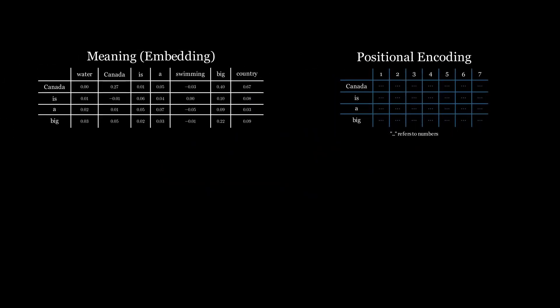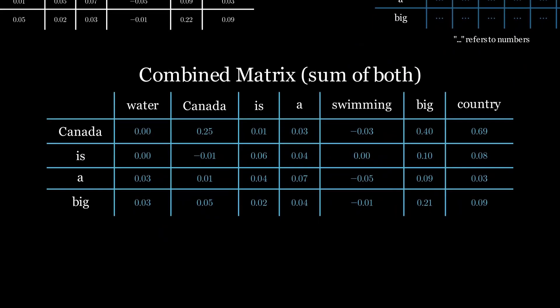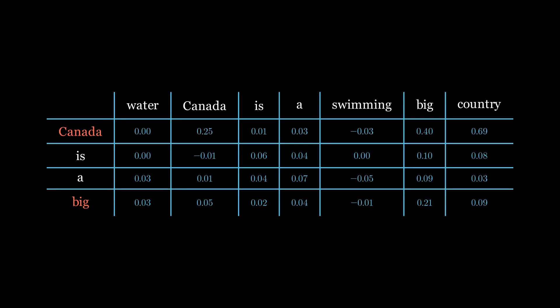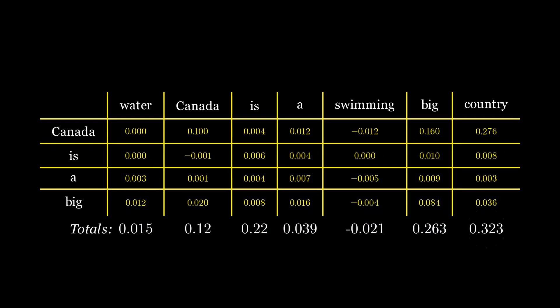That's why the numbers from the first two components are added together. When considering what should be the next word, which of the existing words did you pay the most attention to — Canada and Big? That's what ChatGPT does as well. It generates a number for each word indicating its relative importance. ChatGPT multiplies the attention numbers with the numbers previously generated before calculating column totals. The word with the highest total is selected as the next word.